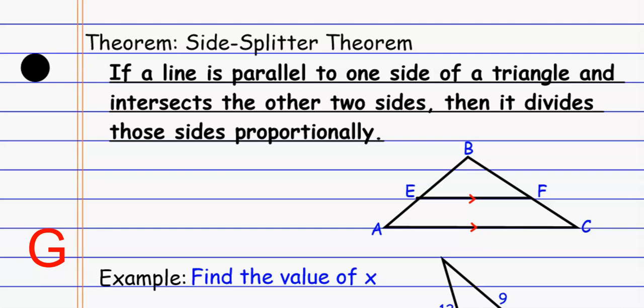If a line is parallel to one side of a triangle and intersects the other two sides, then it divides those sides proportionally. So if I draw any parallel line — parallel to one of the sides of the triangle — and it goes anywhere through this triangle and hits those other two sides, it splits them in a way that's proportional. When you look at the diagram, something like BE over AE — those are the two pieces that the parallel line splits that side into — well, that's going to equal BF over FC. That parallel line cuts both sides in the same ratio, which means they're being cut proportionally. That's the side splitter theorem.